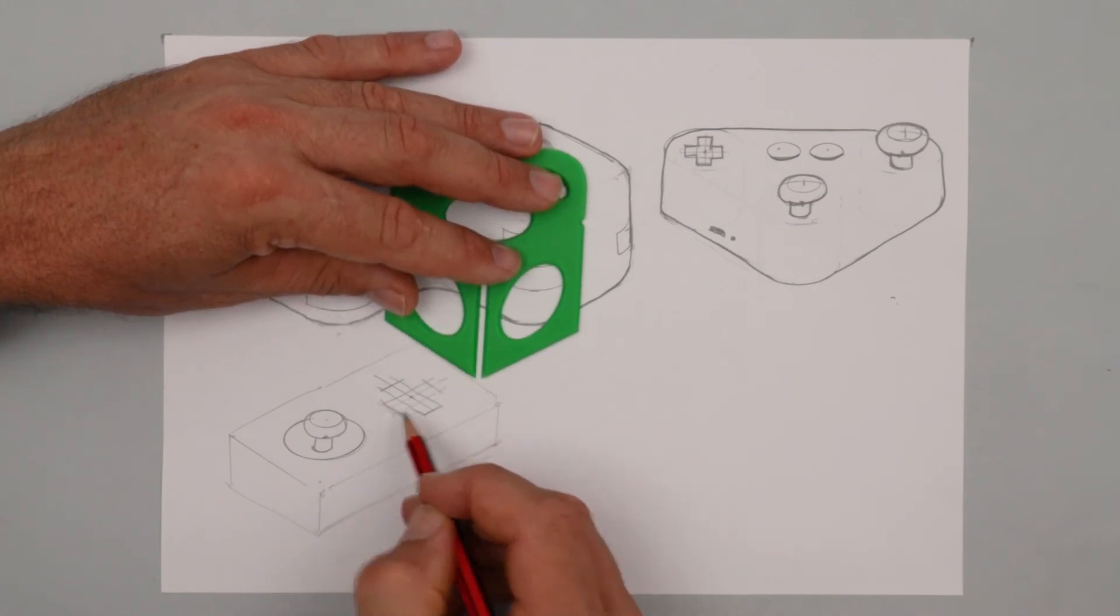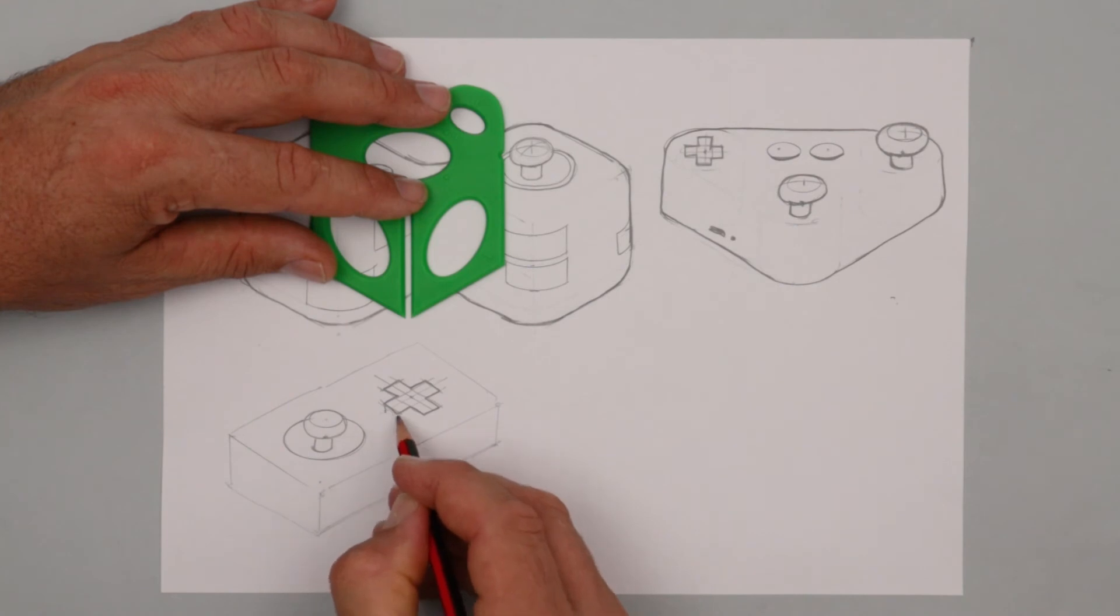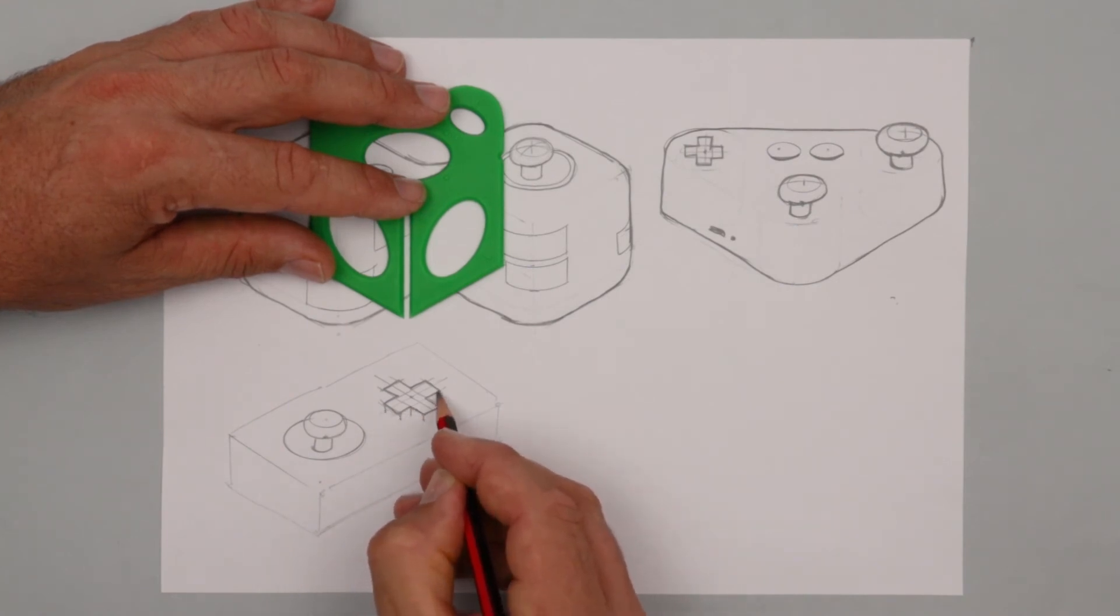From each of the corners drop a short line straight down if you want it to have that 3D kind of look. And then join each of those lines. So you're making a copy of the cross just slid down a little bit. Great.